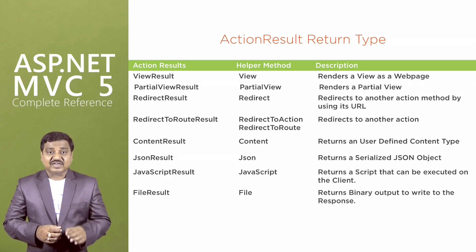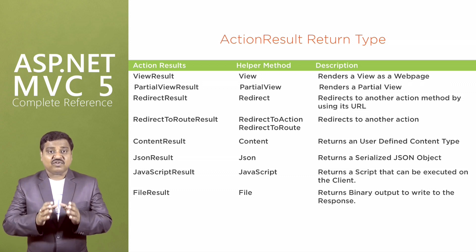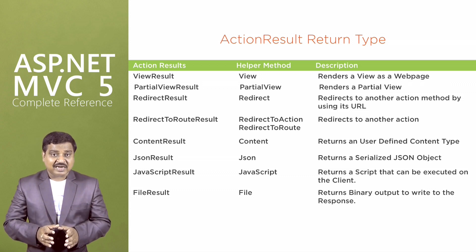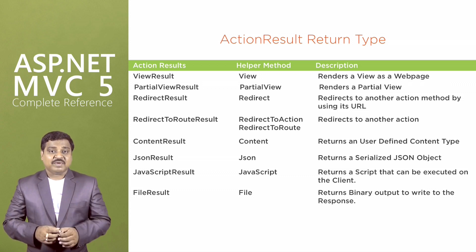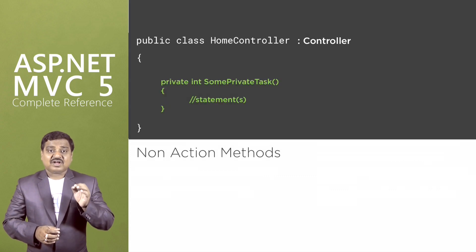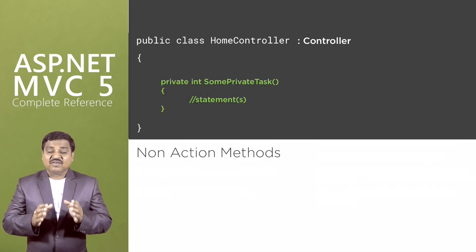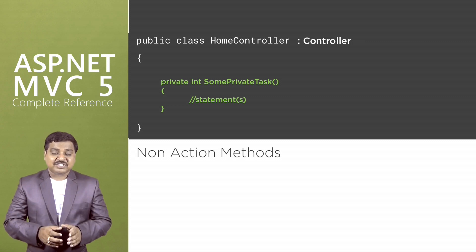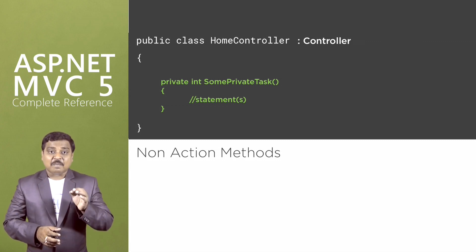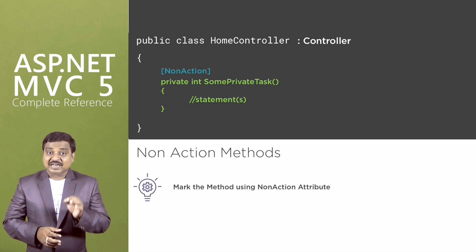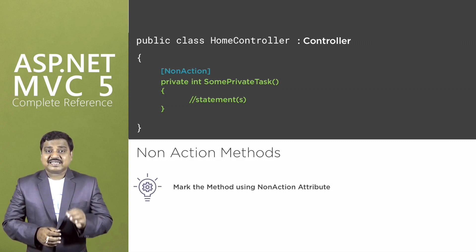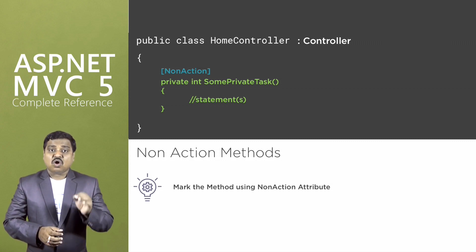By default, the MVC framework treats all methods of a controller class as action methods. If our controller class has a method and we don't want it to be an action method, then we must mark that method with the non-action attribute. Now let us understand all this in action using the demos.